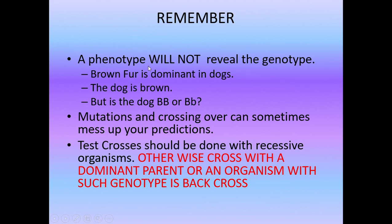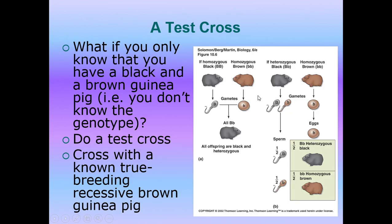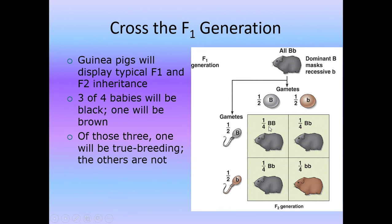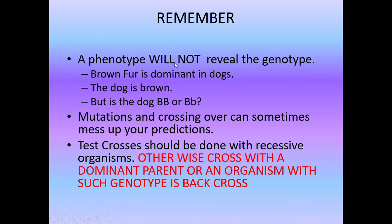Important points to remember: a phenotype will not reveal the genotype. A pure black and a heterozygous black guinea pig look identical phenotypically but are genotypically different. For example, if brown fur is dominant in dogs, you cannot tell by looking at a brown dog whether it is homozygous or heterozygous. Also, mutation and crossing over can sometimes affect predictions — when two genes are linked, crossing over can change results, and a mutation can suddenly alter a trait. Note that a test cross must be done with a recessive organism; crossing with a dominant parent is called a backcross.